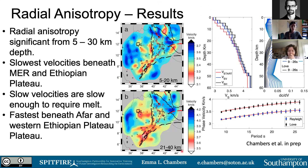These slow velocities are slow enough to require melts. Compositional changes can only account for about 0.1 km/s change from the global average, and temperature changes would need to be in excess of 500°C, whereas we only have increased temperatures in the mantle of about 100 to 200°C. So we require the presence of partial melt, because we have volcanism in this region. This also suggests melt is required beneath the Ethiopian Plateau, which is off-rift.